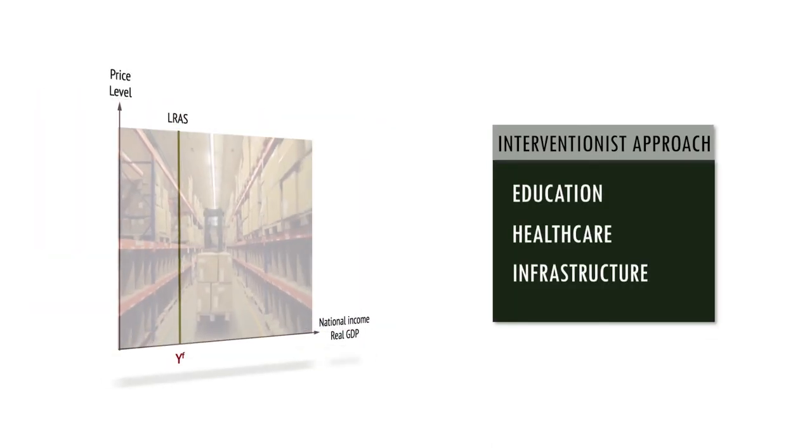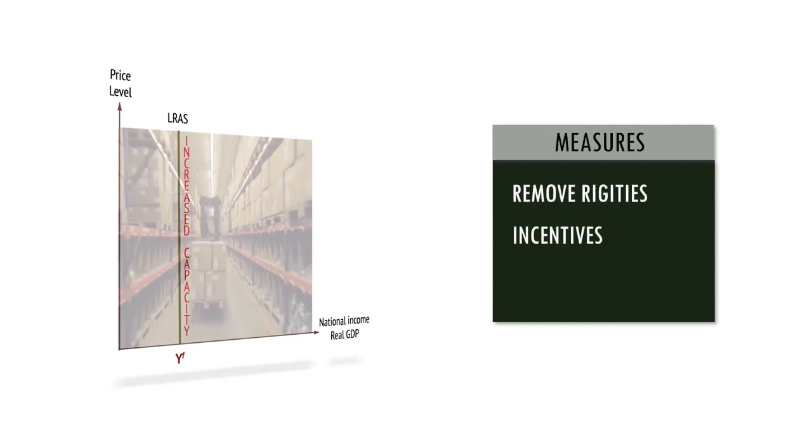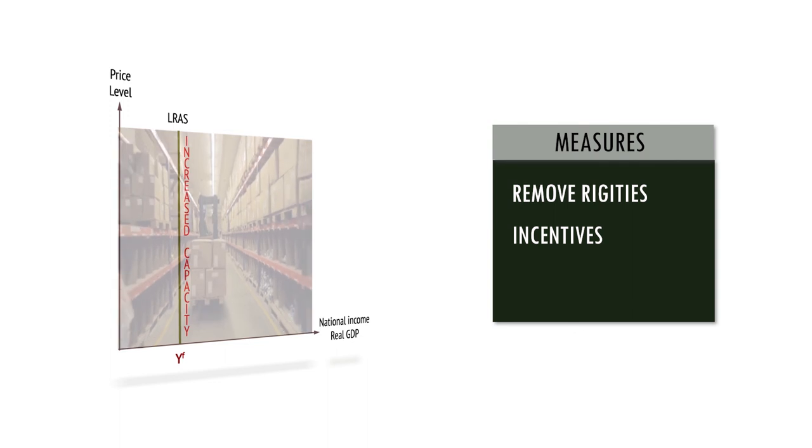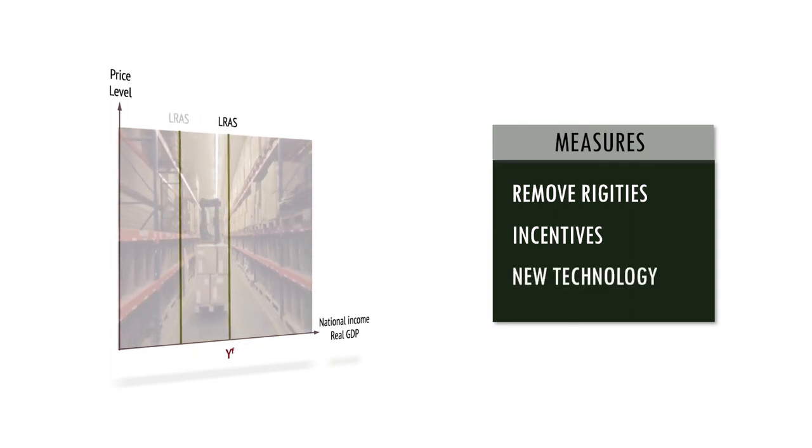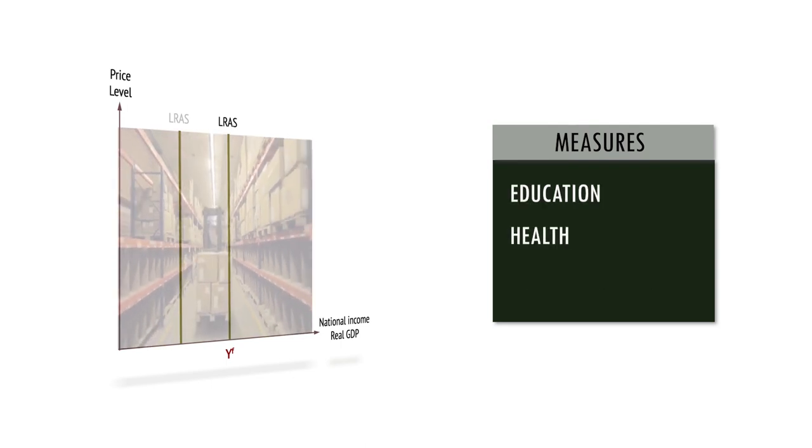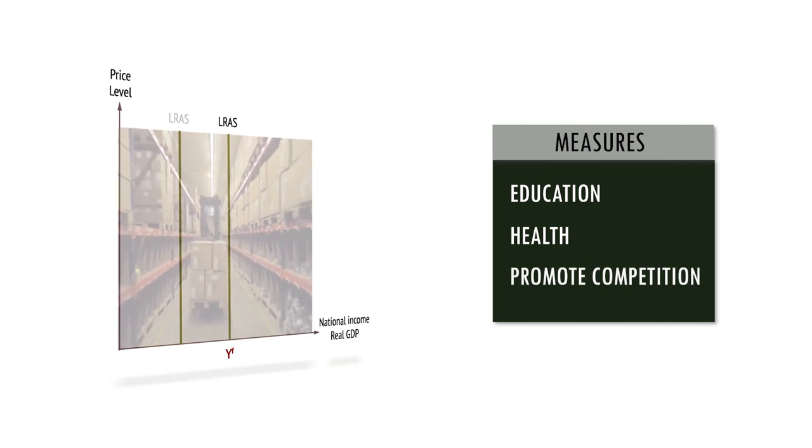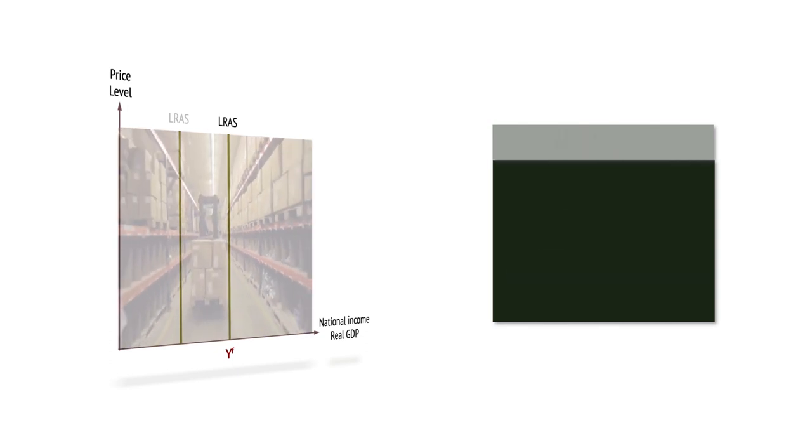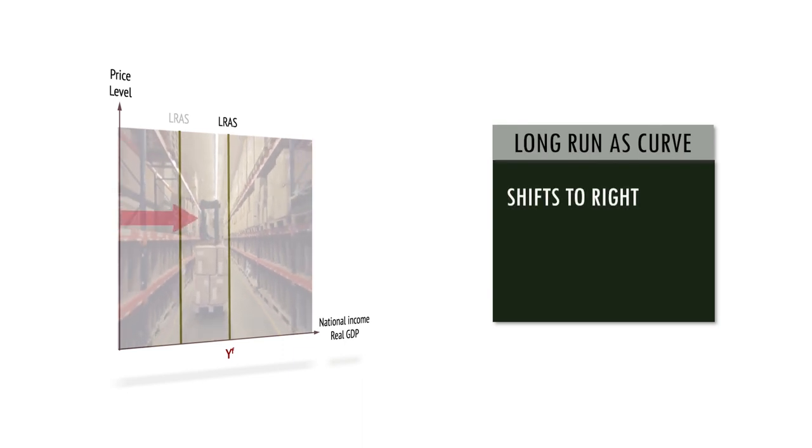Measures include removing rigidities in the labor market, business start-up incentives, incentives to use new technology, encouraging individuals to work, promoting training, education, and a healthy workforce, and removing obstacles to competition. The long-run aggregate supply curve is influenced by supply-side policy. Although vertical, it can shift if productive potential increases.